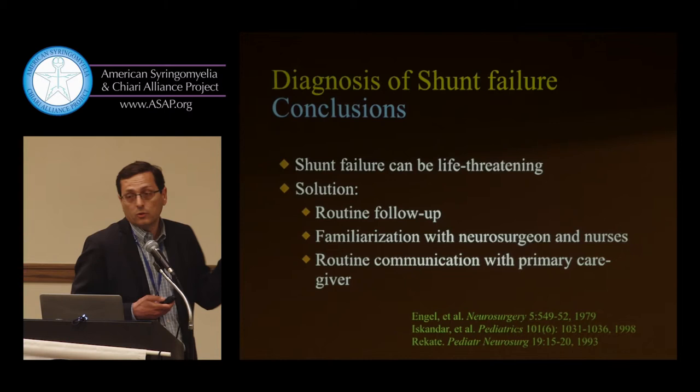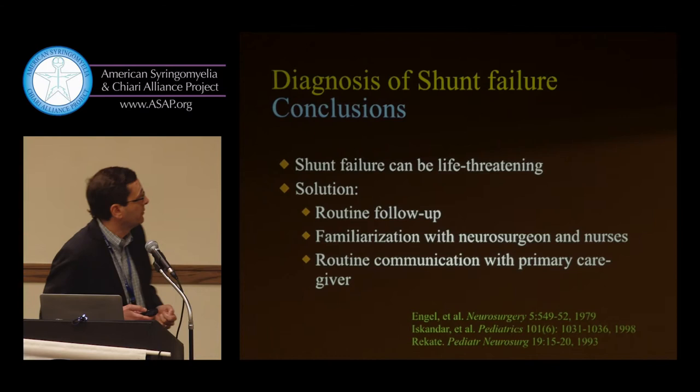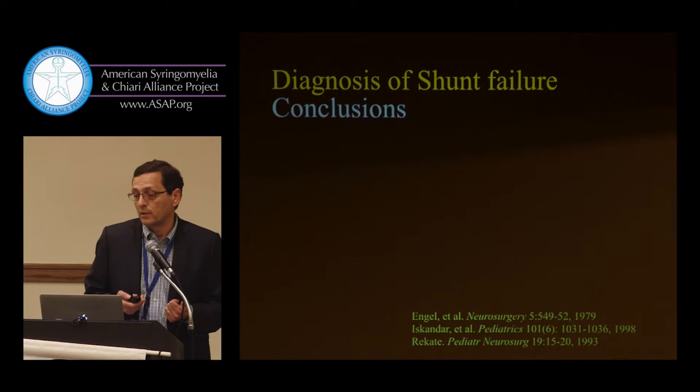Shunt failure can be life-threatening. The solution is routine follow-up — not that I'm going to discover a shunt malfunction on the day they come to clinic once a year, but they get to know me, I get to know them. Familiarization with the neurosurgeon and nurses, and routine communication with primary caregivers, is the key — education.